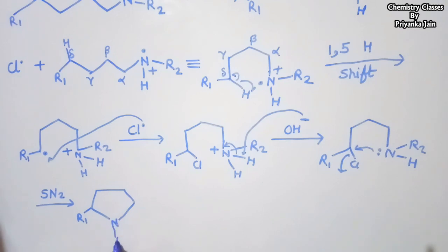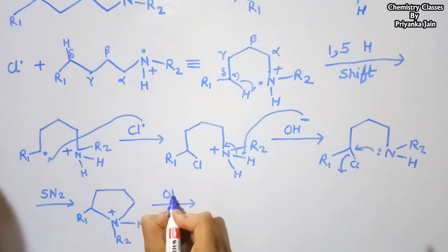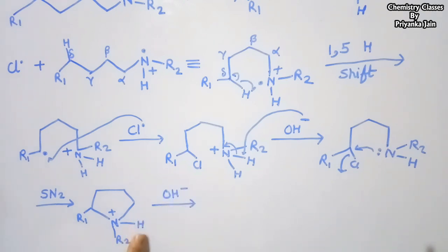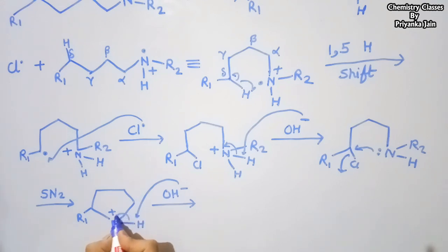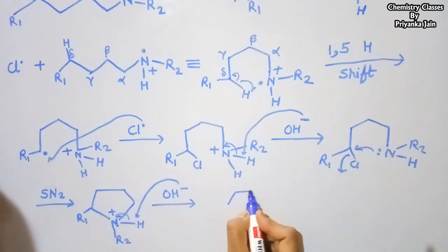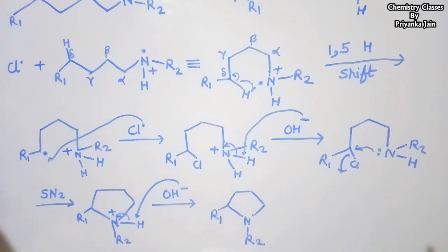The nitrogen, R2 group, and hydrogen are present. A positive charge comes on nitrogen. Again in the presence of the base, this hydrogen is abstracted, the bond electrons shift, and we get the final product — the pyrrolidine derivative formed as a result of this reaction.